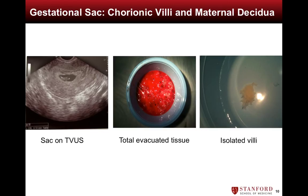The gestational sac shown on the leftmost image is commonly measured using ultrasound prior to performing an MVA. After evacuation of all the miscarriage tissue shown in the center image, the villi comprise a fraction of the total amount of evacuated tissue, so correctly identifying the chorionic villi from maternal decidua is crucial for successful chromosome analysis of the miscarriage tissue.